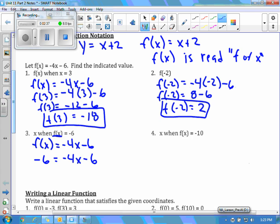And we'll just solve for x now, like a two-step equation. So I would add 6 to both sides. I get 0 equals negative 4x. I'm going to rewrite that up here so I have more room. And I would divide by negative 4, and I'd get x equals 0, because 0 divided by anything is just 0.